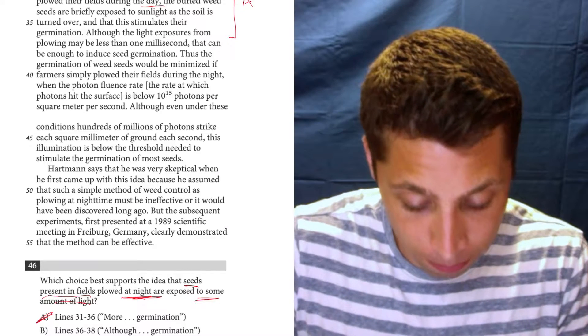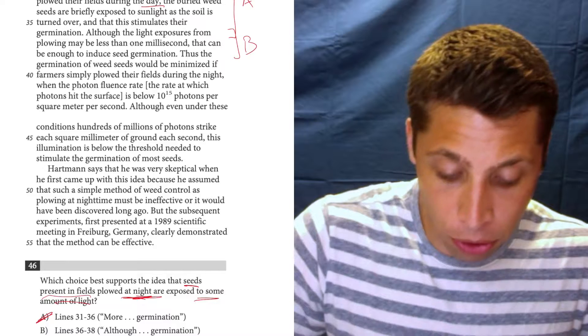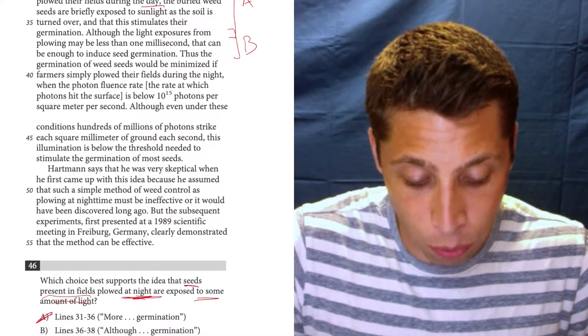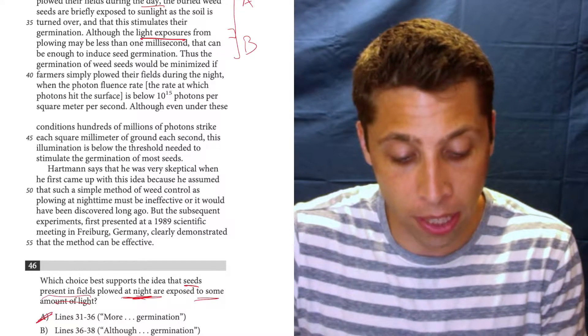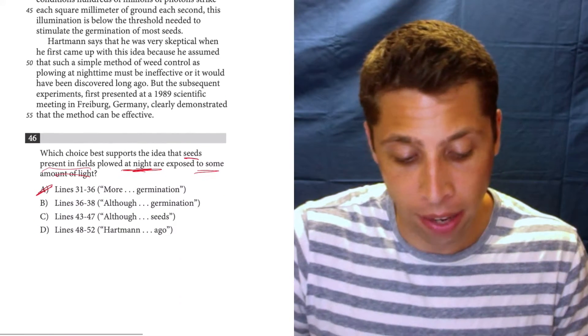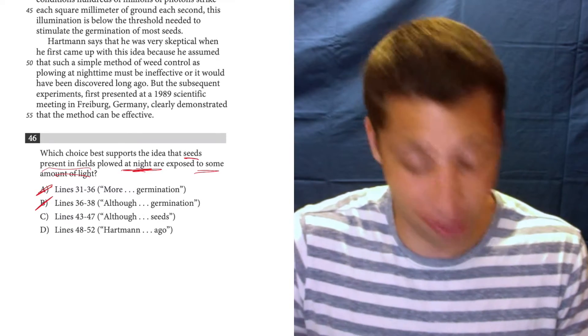36 to 38, right here. Although the light exposures from plowing may be less than one millisecond, that can be enough to induce seed germination. Again, we're talking about light exposure during the day. So that's just not matching with what we're being asked. So it's gone.